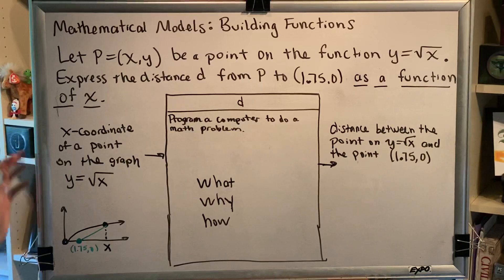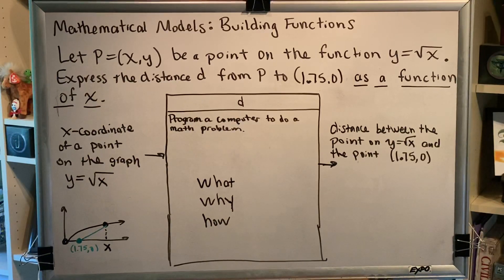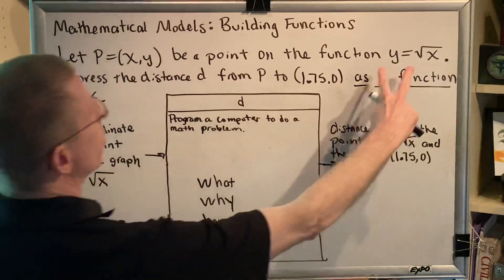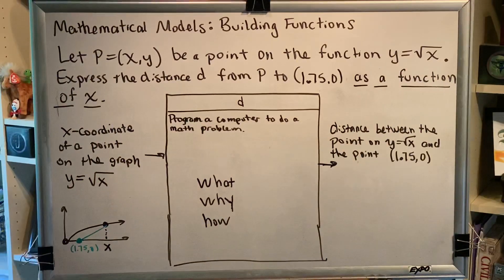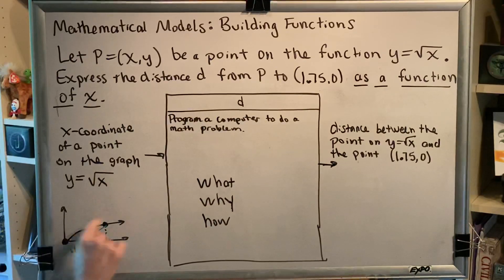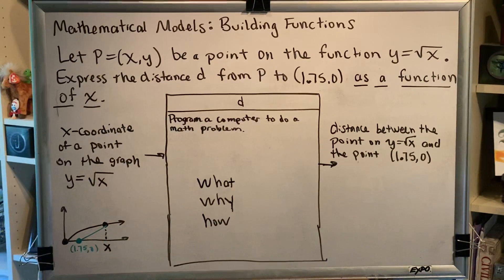Let's read the problem one more time. Let P equal (x, y) be a point on the function y equals the square root of x. Express the distance from P to the point (1.75, 0) as a function of x. So, y equals the square root of x is the square root function. If I made a quick sketch of that, it would look like this — the black curve is what you want to pay attention to.